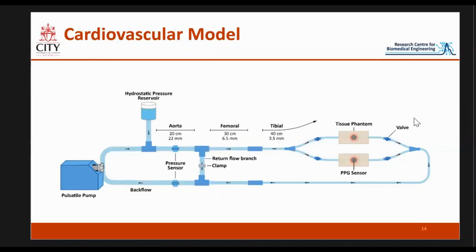Here is an overview of the system as a block diagram. We start with the pump, which represents the heart — we're able to control the stroke volume and heart rate to control the flow rate around the system. This pump doesn't have a reservoir, so we add one to introduce fluid into the system — a simple blood-mimicking fluid. It then leads on to our vascular network, starting from the aorta and going on to the lower body — the femoral and tibial arteries — where it splits at the bifurcation. This is our bilateral system with two branches, and then there's a return flow branch where we can control the pressure into the network.